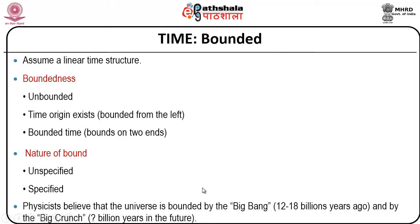Time not only uses structure, it also uses bounded values. Assuming a linear time structure, on a constraint of boundedness it can be unbounded, have a time origin as a bound on the left, or have bounded time bounds on two ends. The nature of a bound can be unspecified or specified. In case of a specified bound, the interval is known; in case of an unspecified bound, the endpoint is not known. Physicists believe that the universe is bounded by the Big Bang theory, approximately 12 to 18 billion years ago, and by a Big Crunch — a big question mark many billion years in the future.